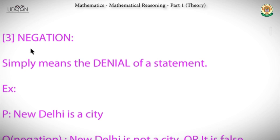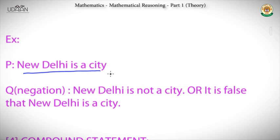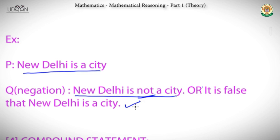Let's move on to negation. Negation means the denial of a statement — for example, if you say yes and I say no. If p is the statement 'New Delhi is a city,' the negation would be 'New Delhi is not a city.' Adding 'not' changes it to a negation. Even 'it is false that New Delhi is a city' is a negation, because both imply the same meaning.